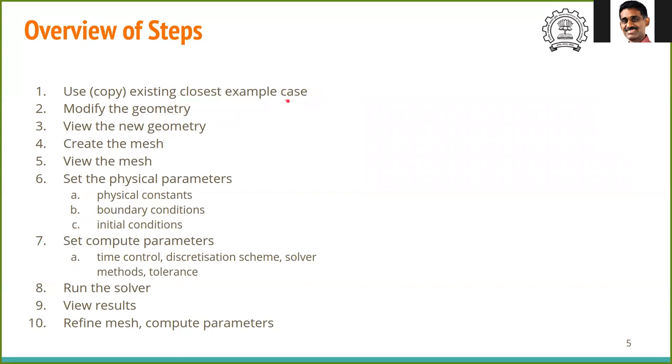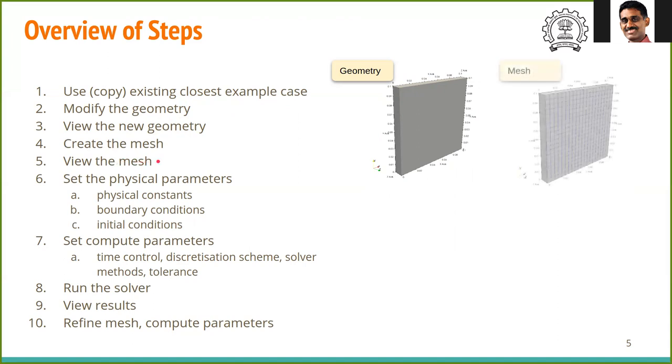One of them you copy to your directory and then modify the geometry. Once you modify the geometry, that has to be done by hand. You visualize it using something known as ParaView. As soon as you modify, you make sure what you modified is right and then display it. You can display the axis so you know the dimensions are all correct as you intended. Then create the mesh, which is the discretization in x and y direction. View the mesh again in ParaView.